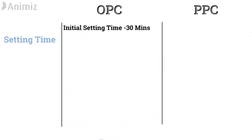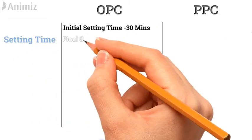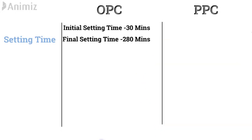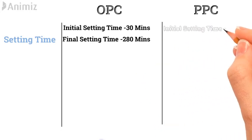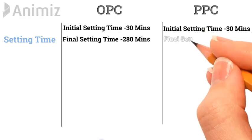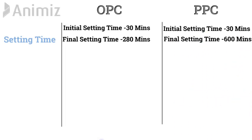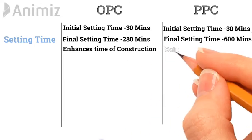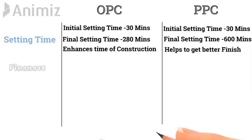Setting Time: For OPC, the initial setting time is 30 minutes and the final setting time is 280 minutes. Whereas, for PPC, the initial setting time is 30 minutes and the final setting time is 600 minutes. The faster setting time of OPC enhances the pace of construction, whereas the slower setting time helps to get better finishing.